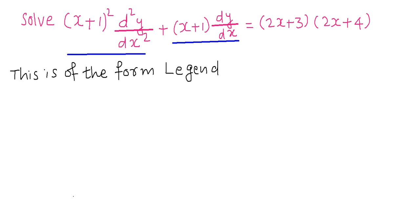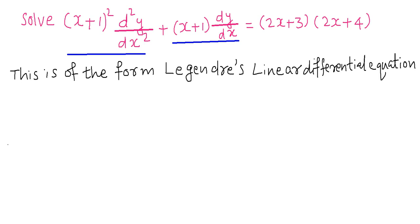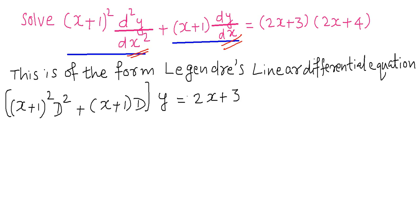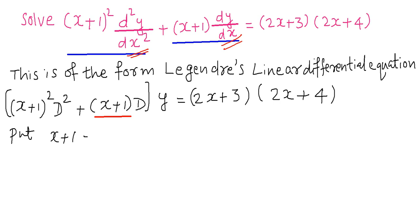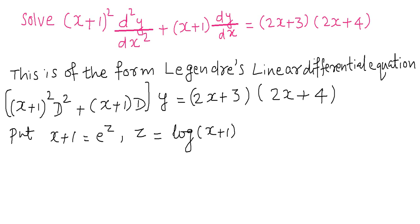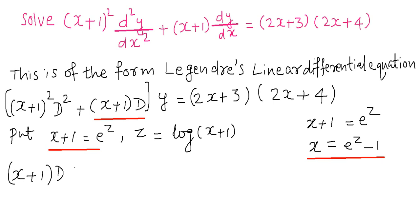We can write (x+1)² d²y/dx² + (x+1) dy/dx = (2x+3)(2x+4). After identifying the equation as Legendre linear, we put x+1 = eᶻ, so z = log(x+1). From x+1 = eᶻ, we get x = eᶻ − 1. We replace (x+1) dy/dx with D' and (x+1)² d²y/dx² with D'(D'−1).